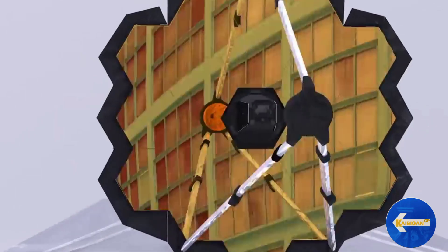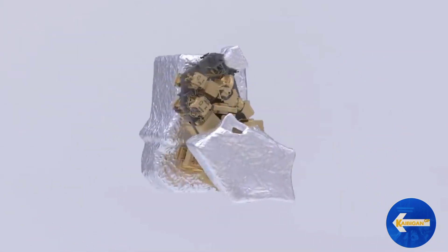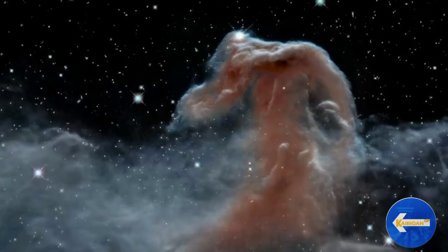Nariyan din ang mga infrared na instrumento, mismo nagpapahintulot sa teleskopyo na gumawa ng dalawang bagay. Pagmasdan ang mga bagay, naglalabas ng mas mahaba, mas mapula.